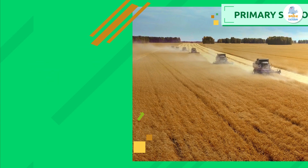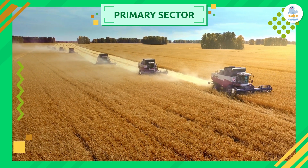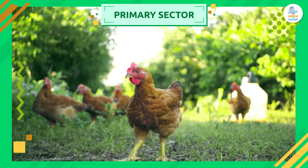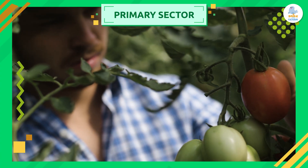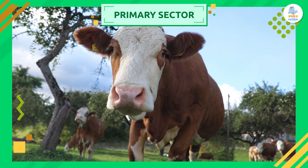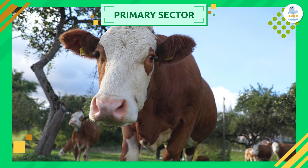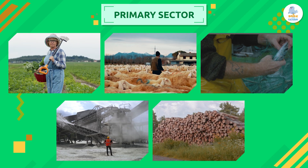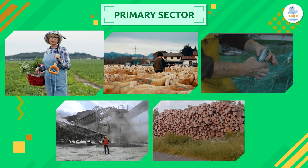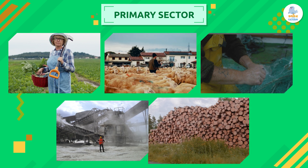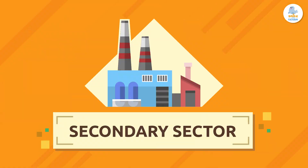The primary sector is the first sector of the production chain. In this sector, people get resources directly from nature by collecting or extracting raw materials from the environment through different processes. An example is cow's milk. The main activities in the primary sector are agriculture, livestock farming, fishing, mining, and forestry.